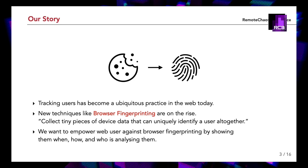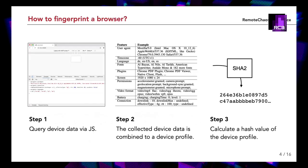Let's first get everybody on the same page and understand how browser fingerprinting really works. The process can be described in three steps. First, we query device data via JavaScript, which gives us a unified interface to an enormous amount of device-specific data. Easy examples include calling navigator.userAgent, navigator.languages, or navigator.connection. More advanced techniques leverage variations in hardware and software to generate device-specific values. For instance, using the WebGL API, we can apply textures and ambient lights to a 3D object. By analyzing the generated picture, we get a slightly different result on every device, improving the user fingerprint by another data point.